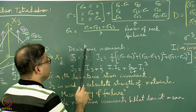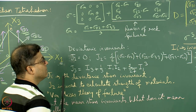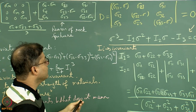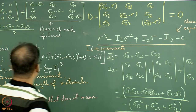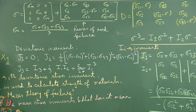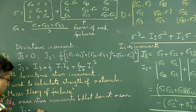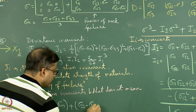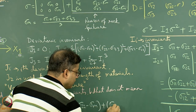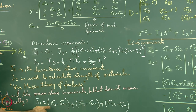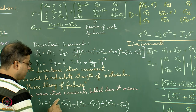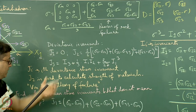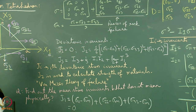Now, if I find out the deviatoric invariants j1, j2, and j3 from this matrix, how will they look? Have a look at the determinant here, previously written in matrix format, with i1 equal to sigma 11 plus sigma 22 plus sigma 33. So j1 will mean sigma 11 minus sigma m, plus sigma 22 minus sigma m, plus sigma 33 minus sigma m, which leads to sigma 11 plus sigma 22 plus sigma 33 minus 3 times sigma m. But 3 times sigma m is itself sigma 11 plus sigma 22 plus sigma 33, so j1 comes out to be 0.